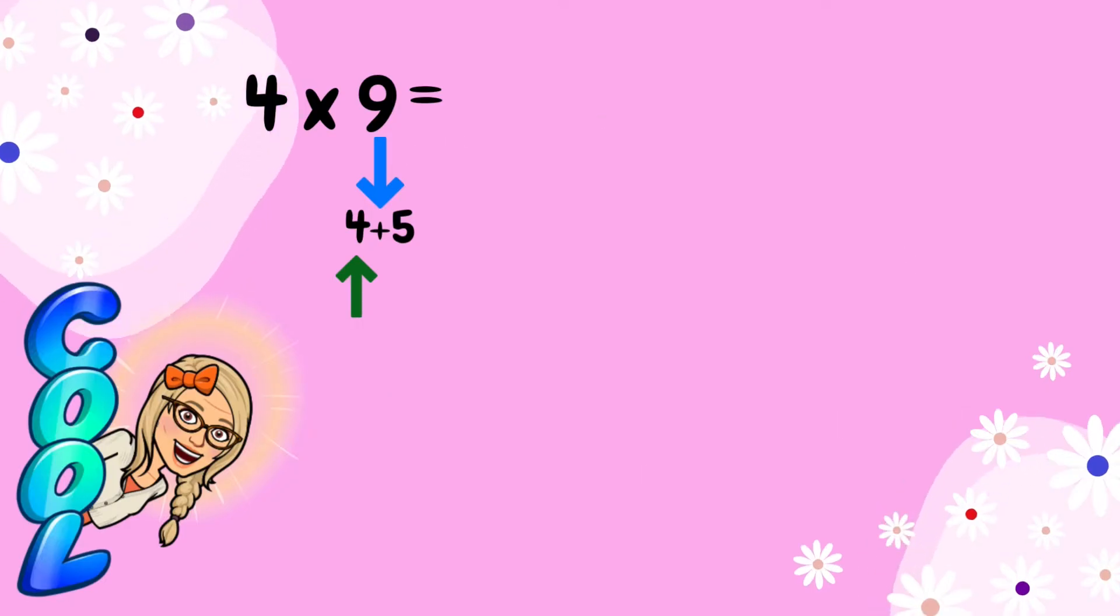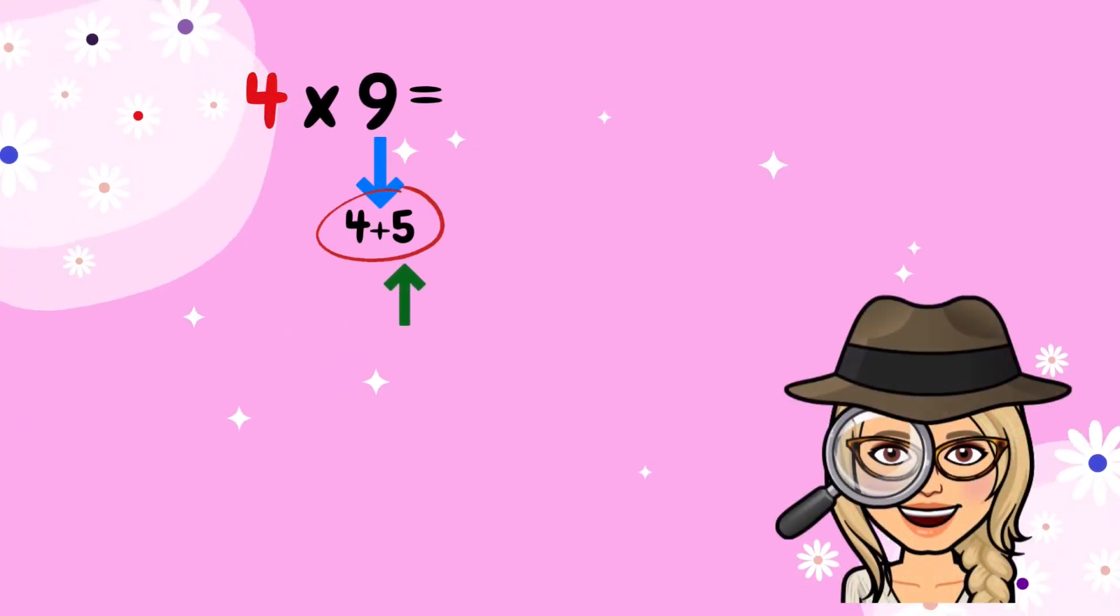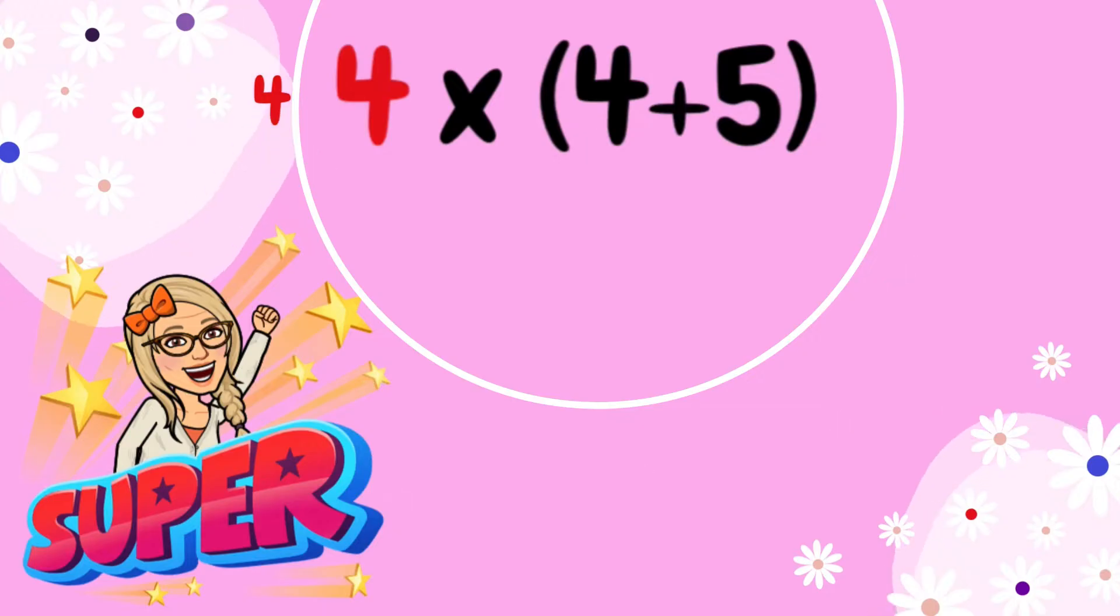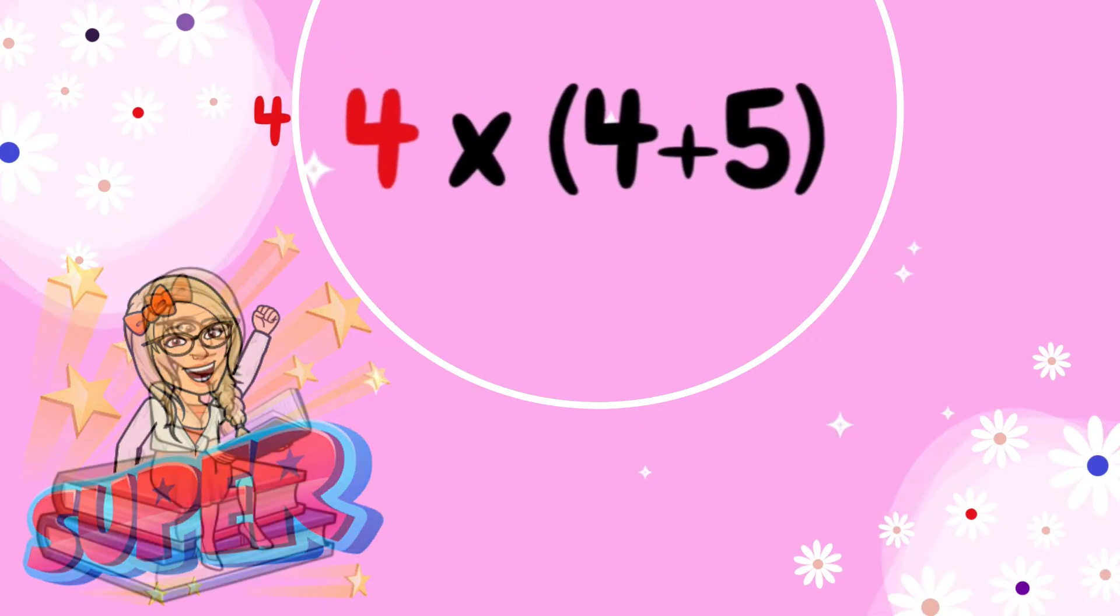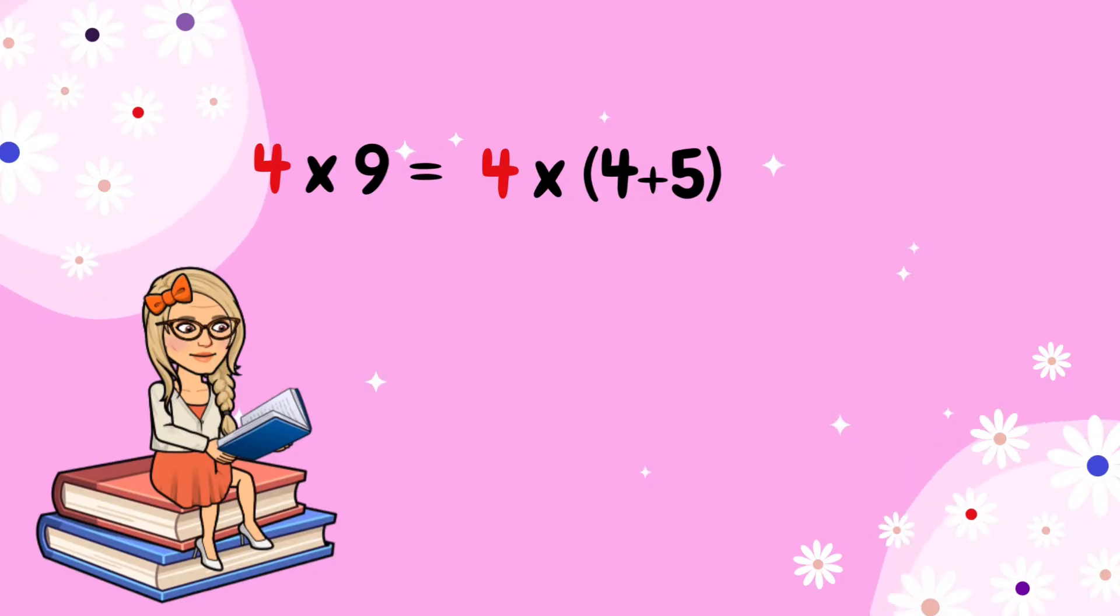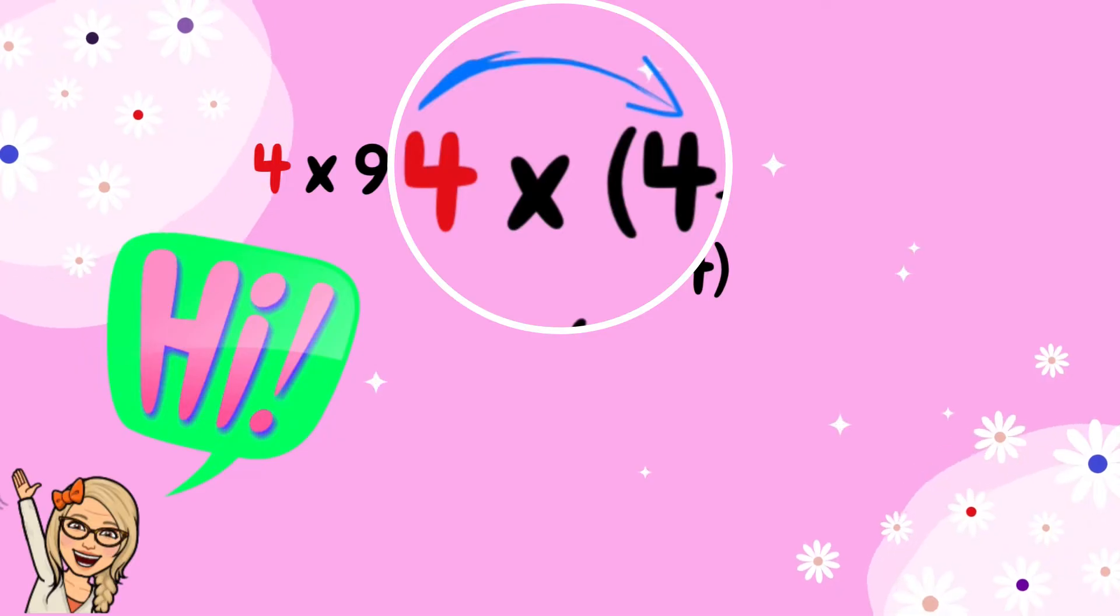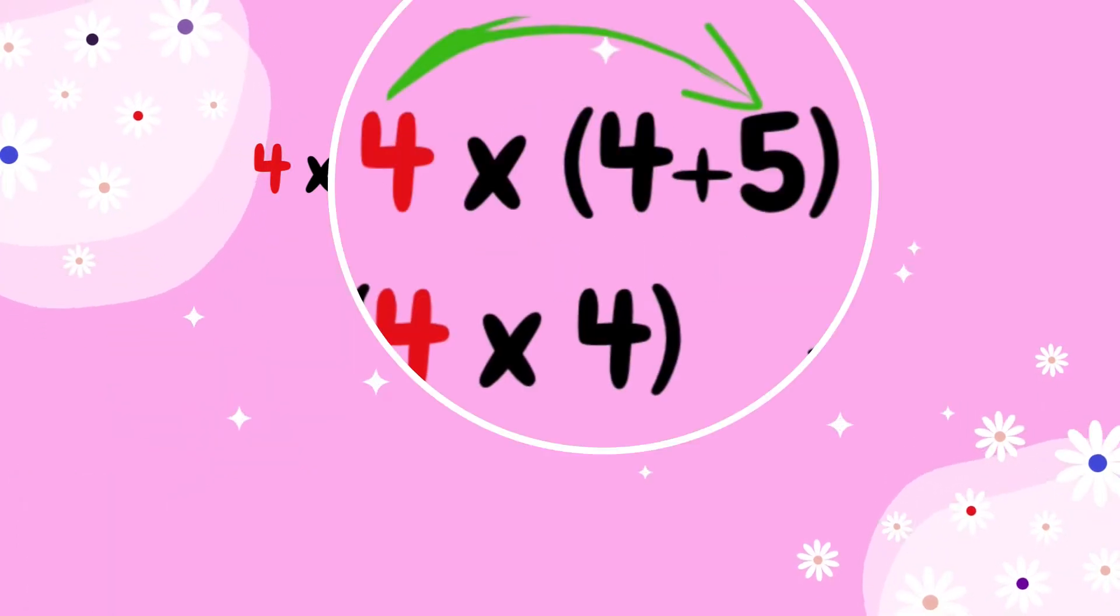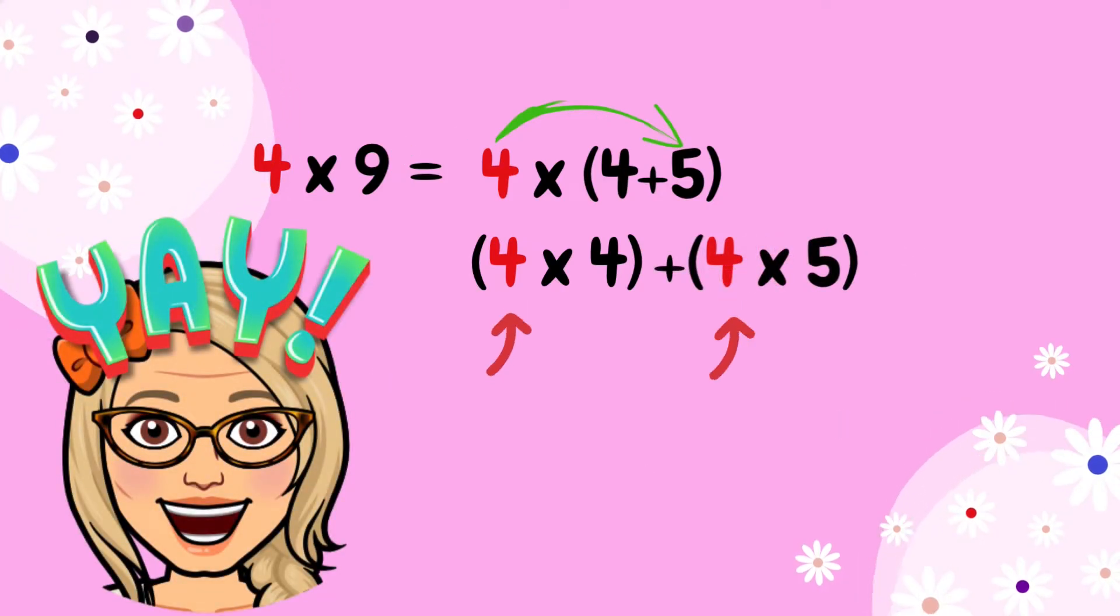Now my next step is to rewrite the multiplication sentence. I am going to rewrite it using the factor that I did not break, which is 4, and using 4 plus 5, which are the numbers that I got from the breaking of 9. So my multiplication sentence would be 4 times open parenthesis 4 plus 5 close parenthesis. Next I am going to multiply 4 times 4 and then 4 times 5. It's very important to remember that I'm multiplying the factor that I did not break, which is 4, times the numbers that I got from the factor that I broke apart, which was 9.